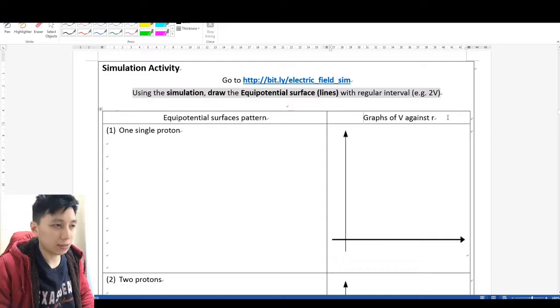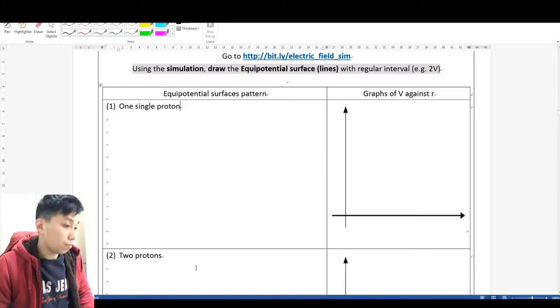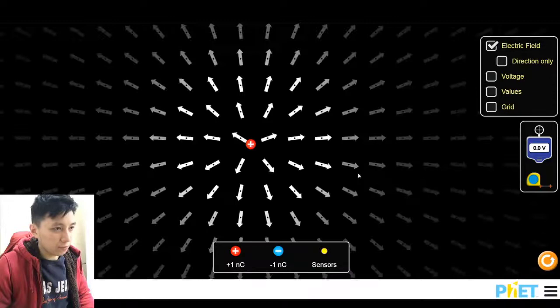So I'll show the first one, there are three examples in total. The first case is having only one single proton or positive charge. In the simulation environment you can drag this positive charge out, and this is what you see.